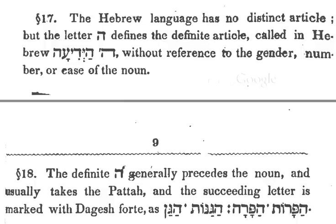The Hebrew language has no distinct article — that is, 'the' or 'a' — but the letter He defines the definite article, which in English would be 'the.' Called in Hebrew He-Hayidiah. Without reference to the gender, the number — singular or plural — or the case of a noun, the definite He-Hayidiah...